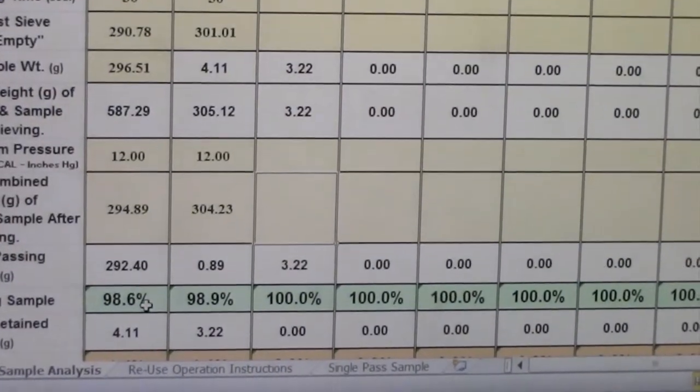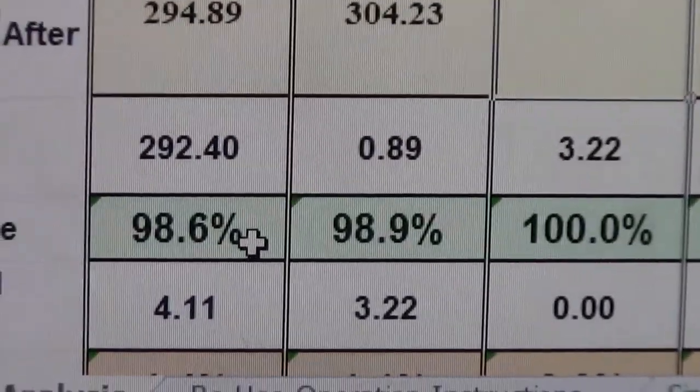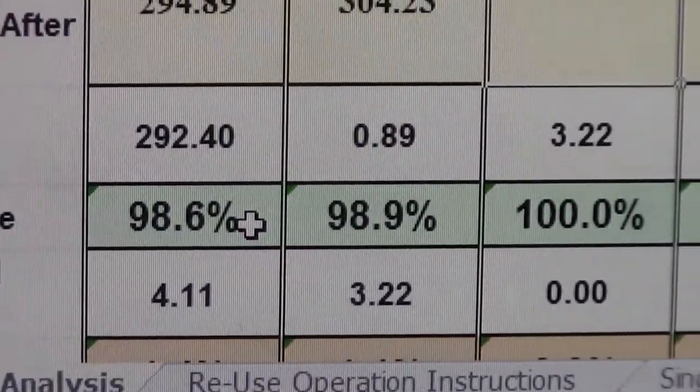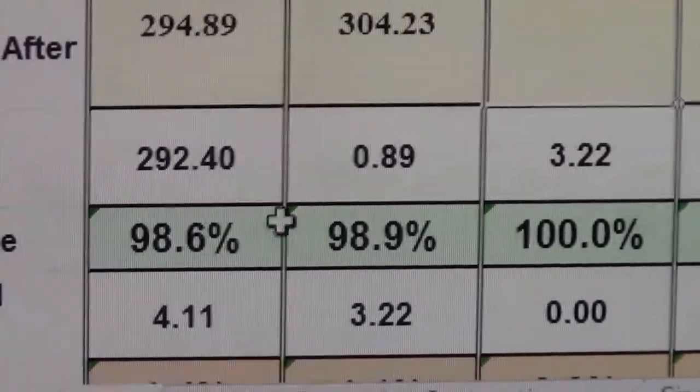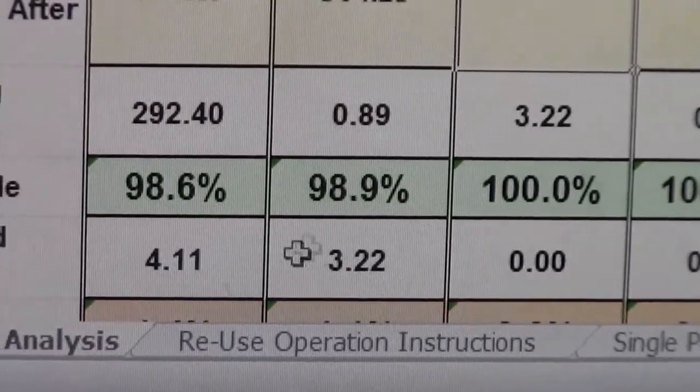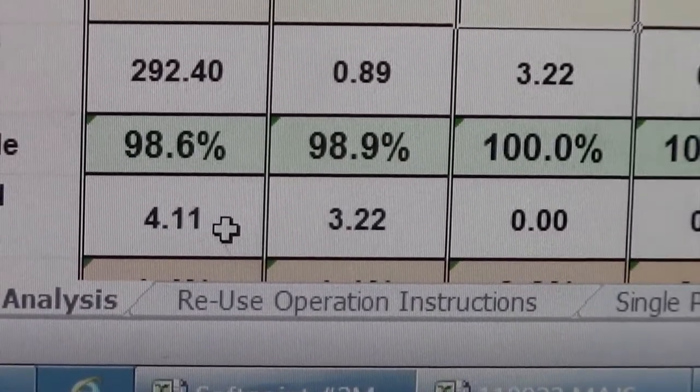As you can see, 98.6% of the sample passed through the 75 micron or 200 mesh screen, and the amount retained was 4.11 grams.